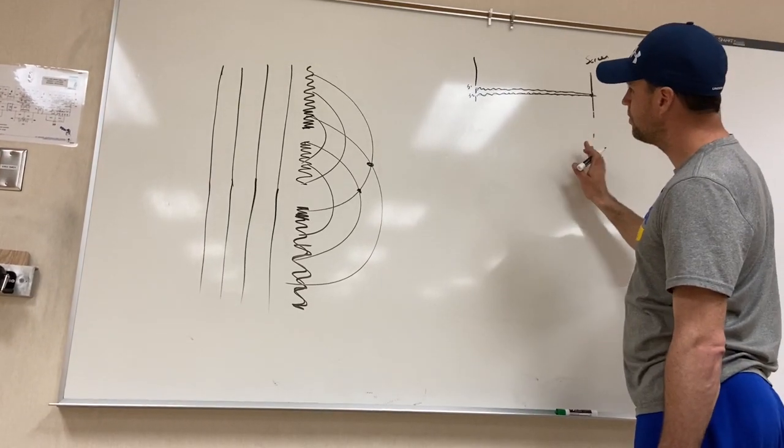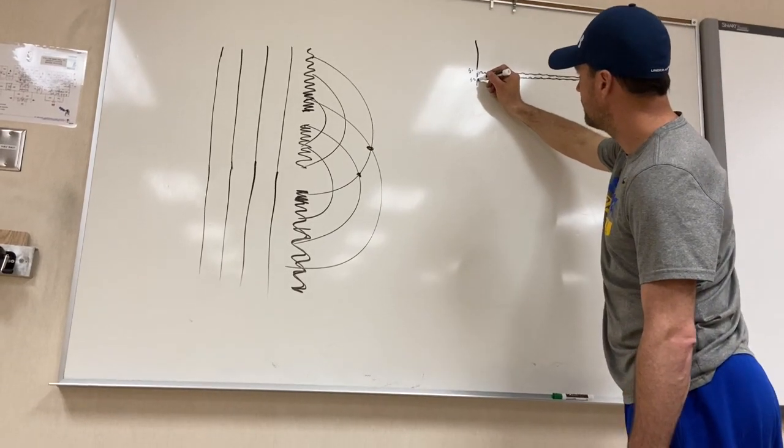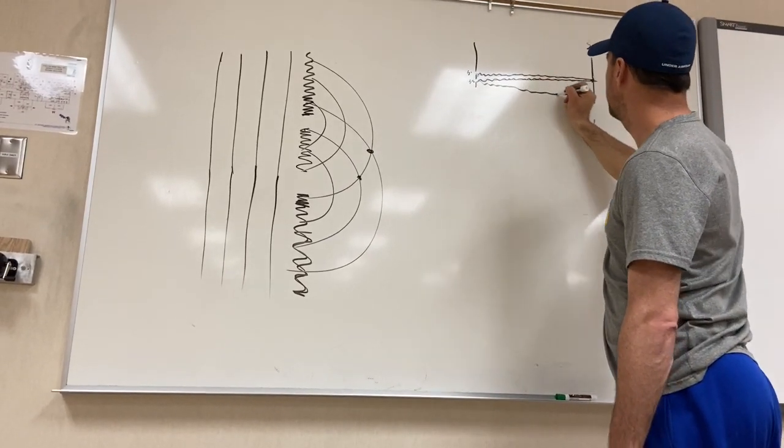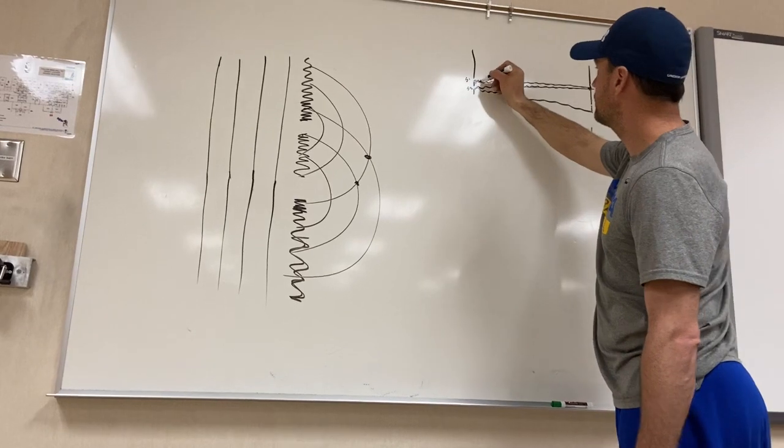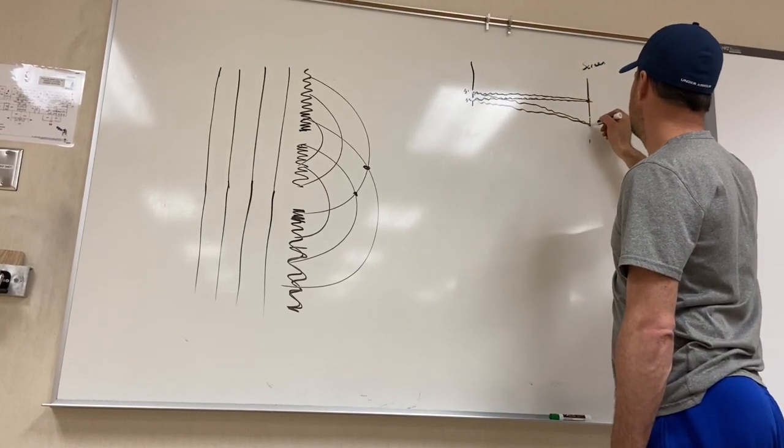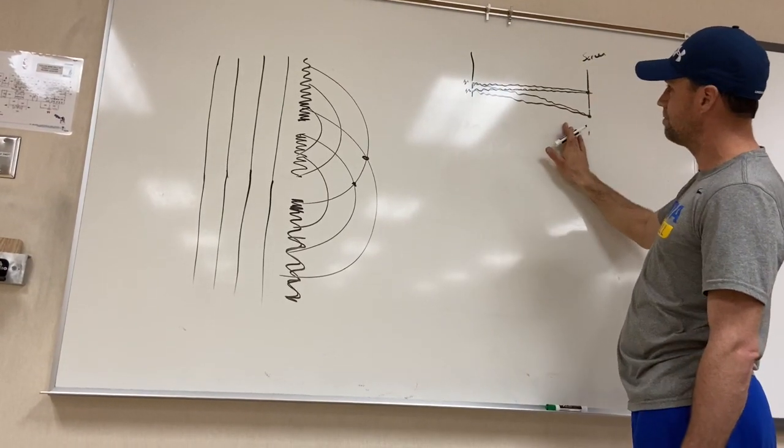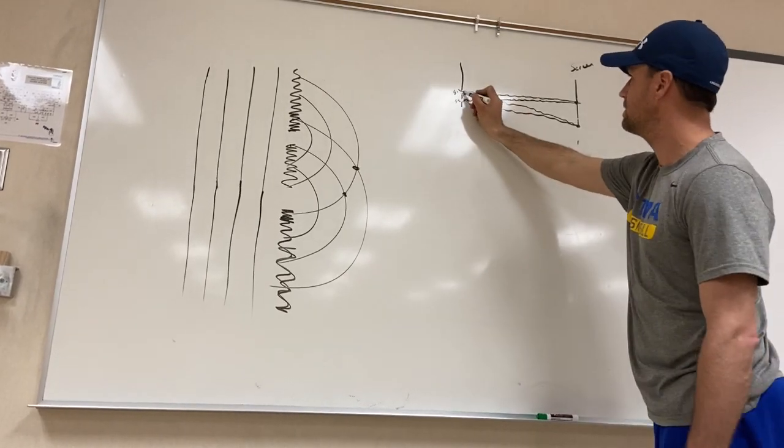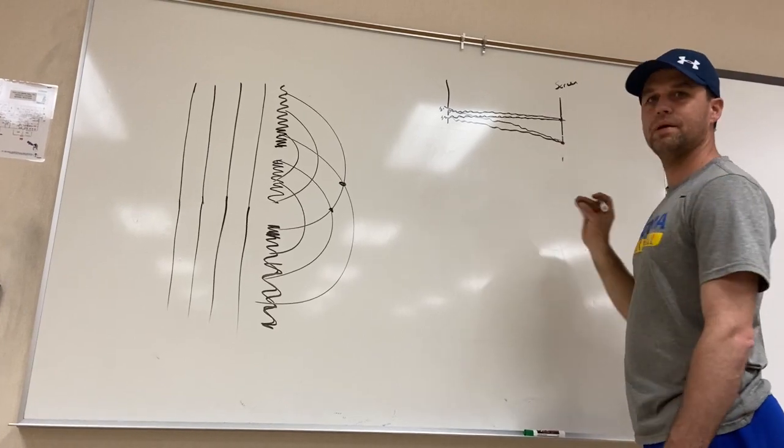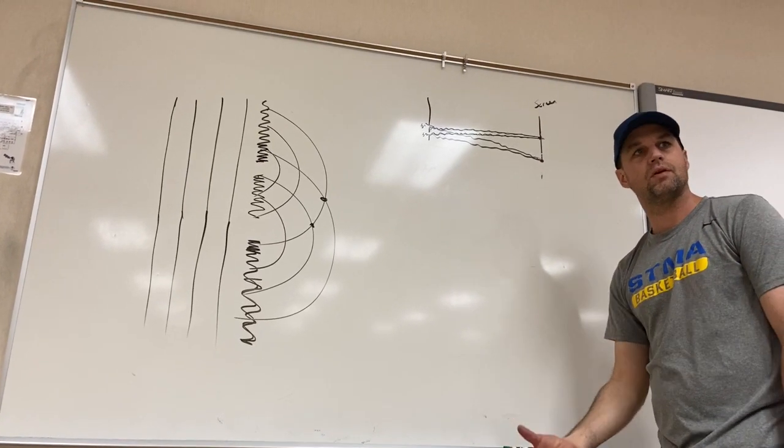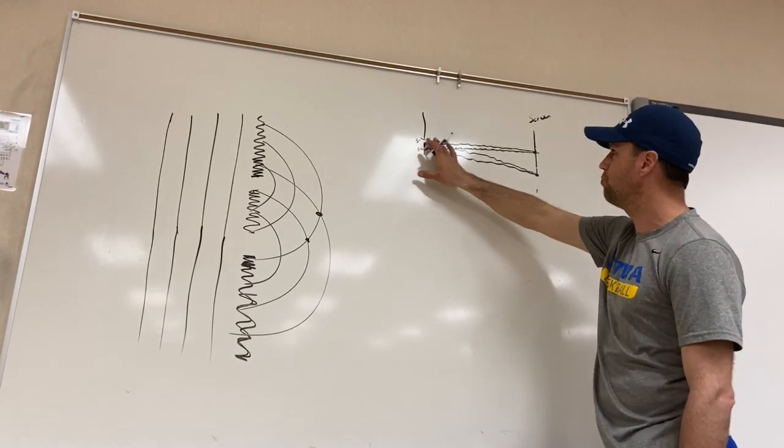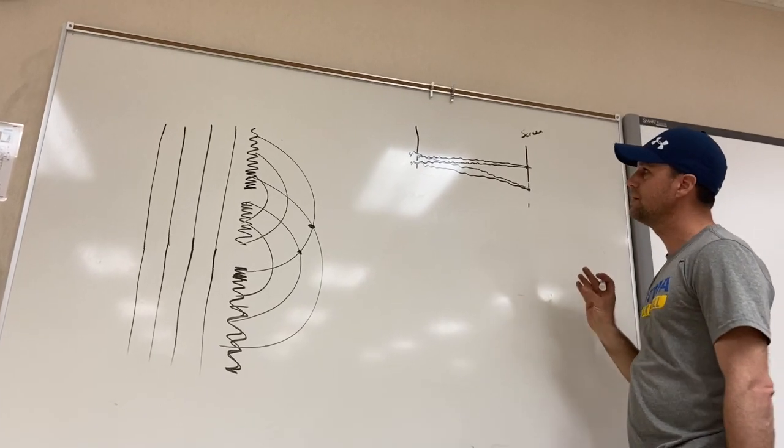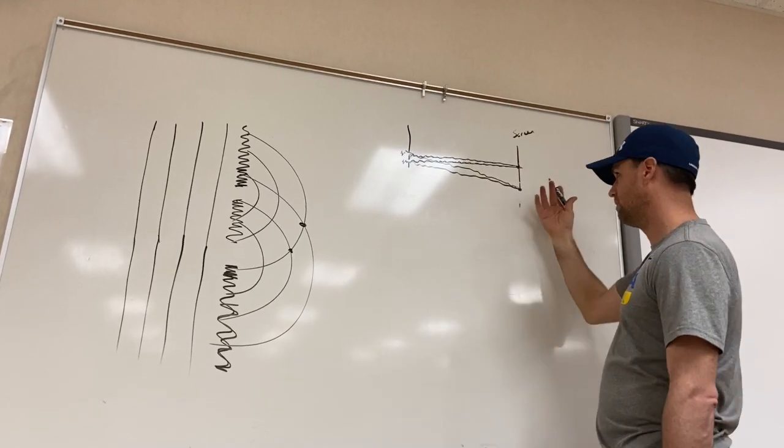Right. There is going to be another point again where they're in phase where the light coming from slit two and the light coming from slit one are off by exactly one lambda. We're going to be in phase again. Obviously, this path length is not the same as this path length. But if they're off by one lambda, slit one has done exactly one extra wave, then we're going to get constructive interference again.